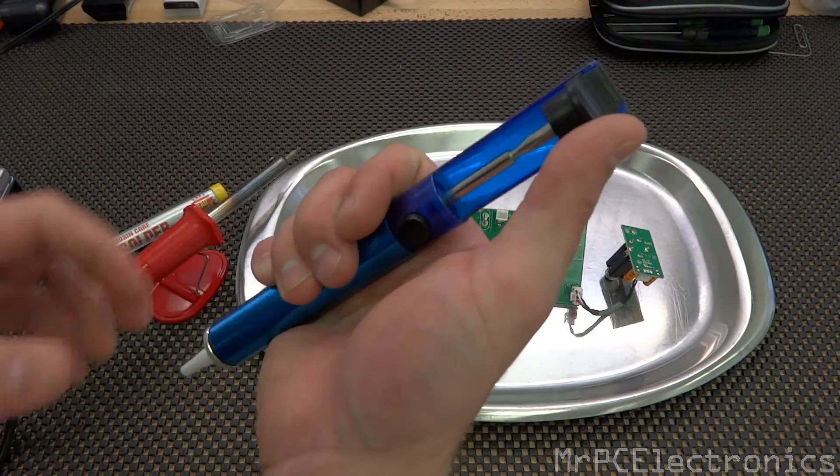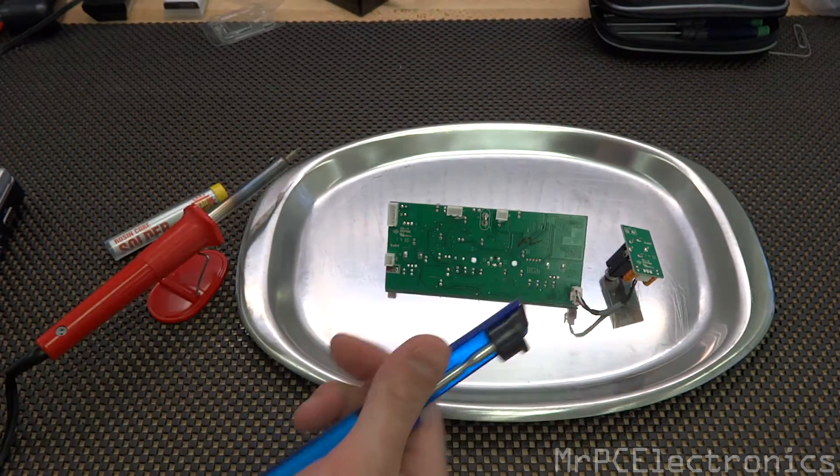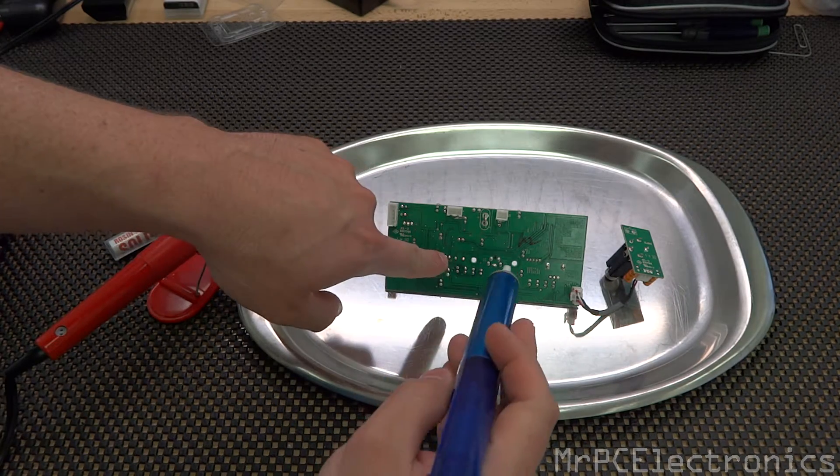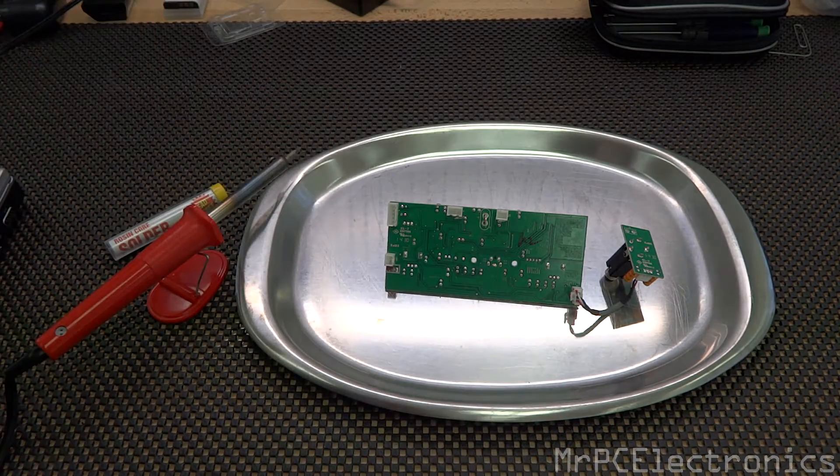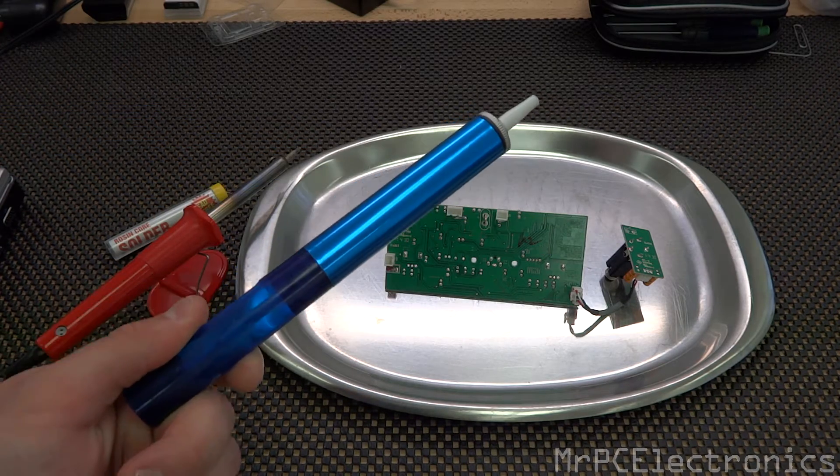Now this is a suction tool. You push down, you hit the button, and it sucks the solder right out. So as you're heating it, you put it there and hit the button, and it extracts it. There's other ways of doing it, but this is by far the quickest and easiest way.